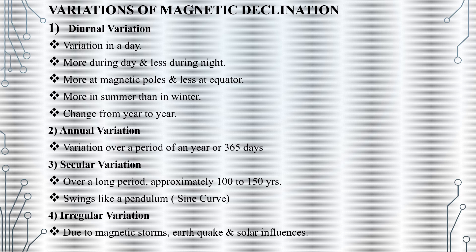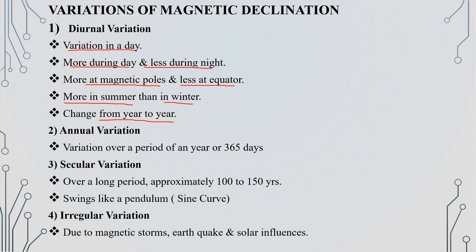Variations of magnetic declination: The first is Diurnal Variation, which takes place during day and night time and is affected by magnetic poles and the equator — summer and winter values are the same. The second is Annual Variation, which takes place over a year. The third is Secular Variation, which is a long-period variation of approximately 150 years.